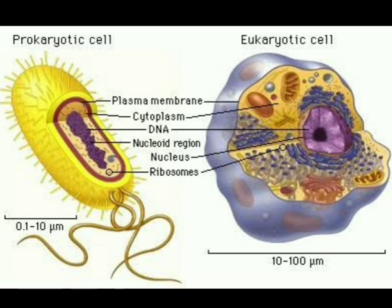Eukaryotic cell can also be split into two parts: 'eu' and 'karyotic'. Here 'eu' means true and 'karyotic' means nucleus. So eukaryotic means true nucleus.